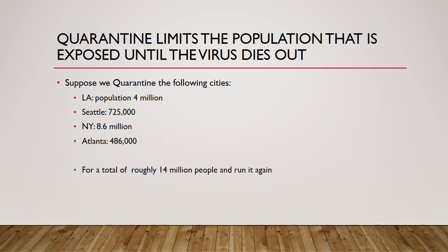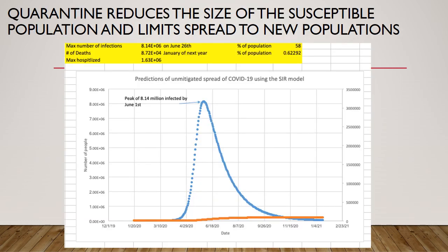Quarantine limits the population that is exposed until the virus dies out. China did an excellent job of quarantine. Suppose you could quarantine 4 million people in L.A., 725,000 in Seattle, 8.6 million in New York, and around 500,000 in Atlanta — a total of roughly 14 million people. If you run the SIR model on that population, instead of 191 million being infected, your peak infection is 8 million, your deaths are 87,000, and the peak moves to June 1st — much easier to handle.